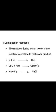The first is combination reaction — the reaction during which two or more reactants combine to make one product. You can observe in all three examples two reactants combine to make a single product. C + O₂ gives CO₂, CaO + H₂O gives Ca(OH)₂, and Na + Cl₂ gives NaCl.